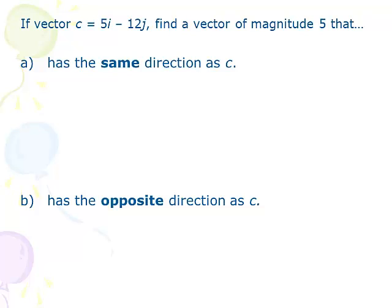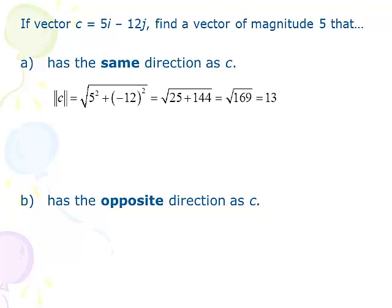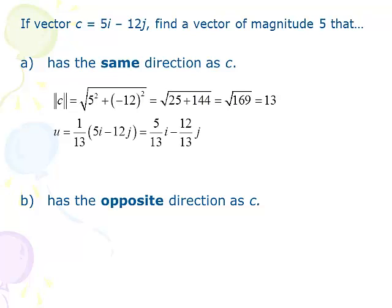There's a difference between finding a vector with twice the magnitude versus finding one with a specific magnitude of 5. The first step is to find the unit vector in the same direction. To do that, we first find the actual magnitude of vector c — we square the x, square the y, add them up, take the square root — and we get a nice answer here: 13. Now that we have the magnitude of c, we find the unit vector by multiplying 1/13 times the vector, ending up with 5/13 i minus 12/13 j.